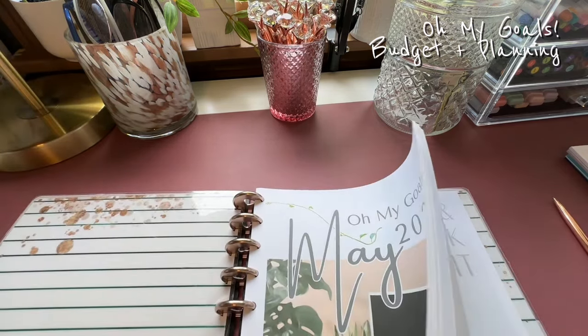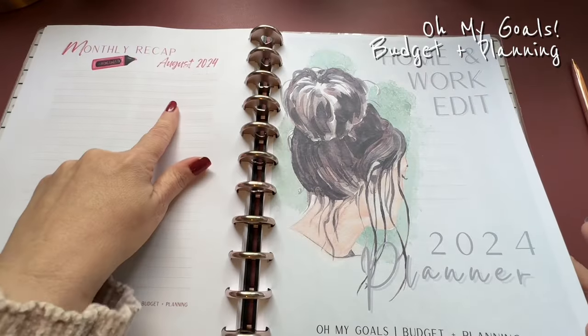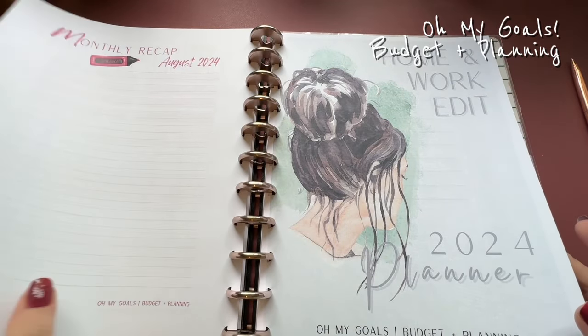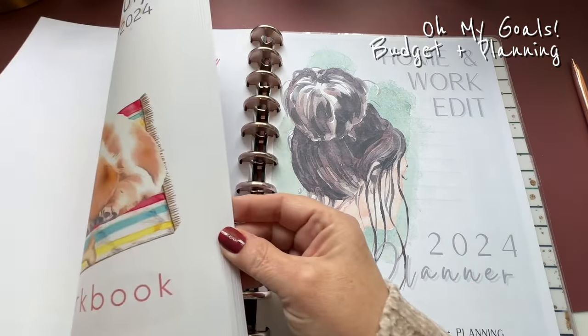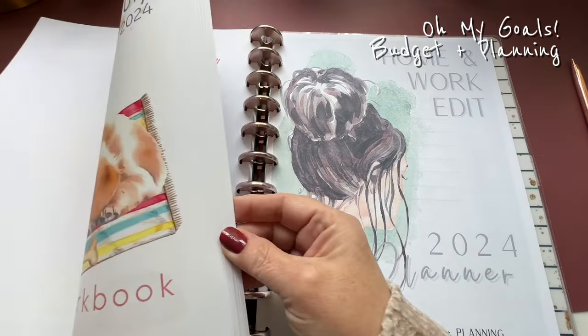August should look like this: month on two pages monthly, then we get into five paycheck budget breakdowns and sinking funds, monthly goals, spending tracker, bill payments, debt tracker, dinner plans, and monthly recap.